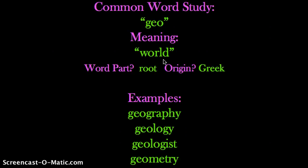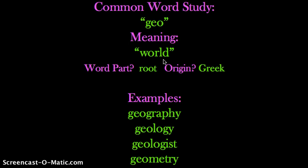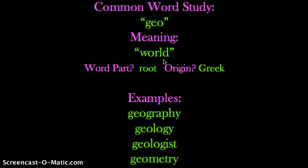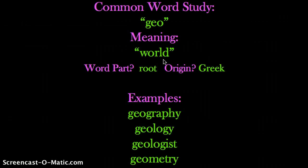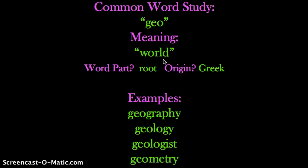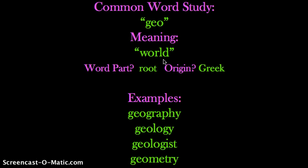Our last word is geometry. Now I know what you're thinking — geometry is a math word, Mrs. Koenig. What does that have to do with world and geo? Well, it actually has a lot to do with that, because the word geometry simply means the study of lines and shapes found on the earth. In other words, it's the earthly lines and shapes that we deal with in our everyday world that we see out in the world around us.